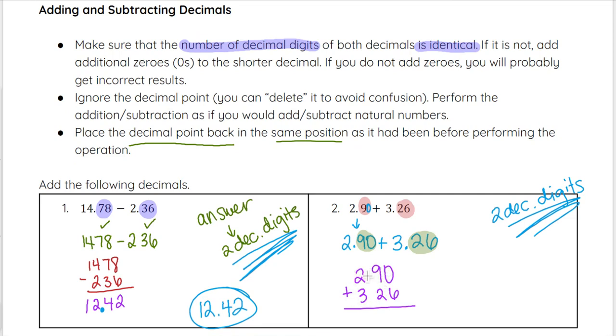So if I eliminate those decimal points, then I'll add down the columns. 0 plus 6 is 6, 9 plus 2 is 11, carry the 1. 3 plus 2 is 5, plus another 1 is 6.